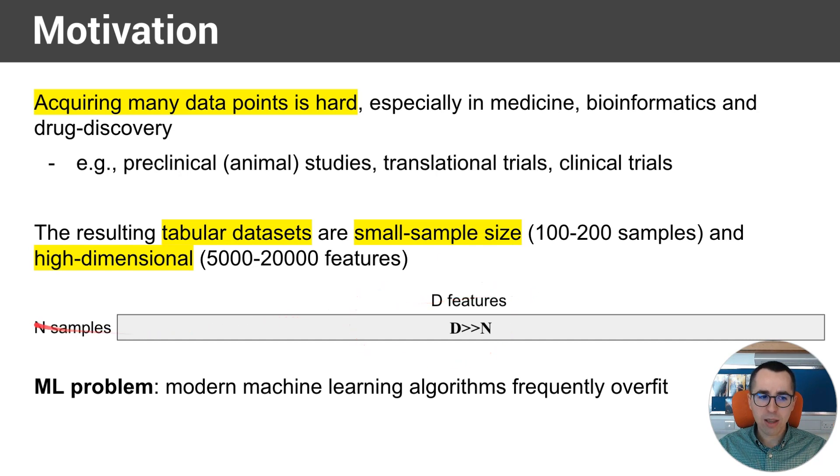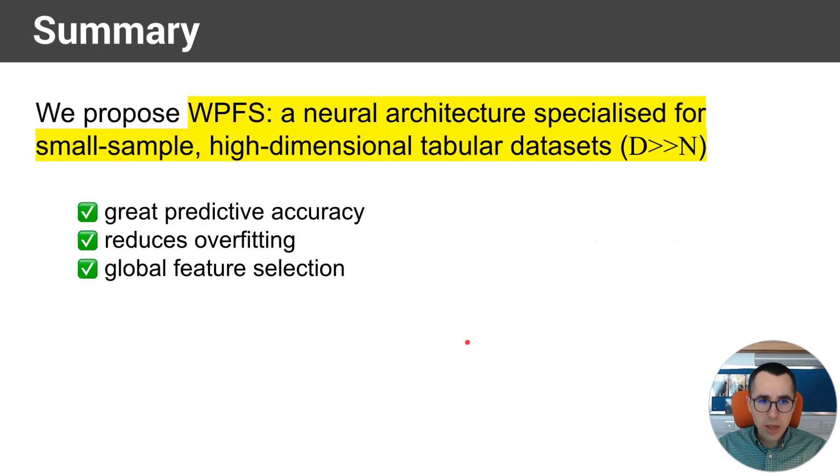Visually, the tabular datasets look like this, where there are only a handful of samples and very many features. From a machine learning perspective, modern methods frequently overfit on such high-dimensional data. In this paper, we propose a neural architecture which is specialized for the case of small sample and high-dimensional tabular datasets. We'll show that our method has great predictive accuracy and it reduces overfitting while performing global feature selection.